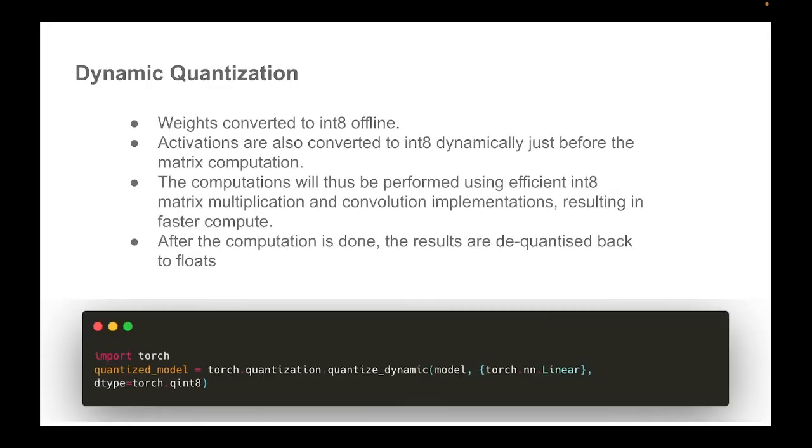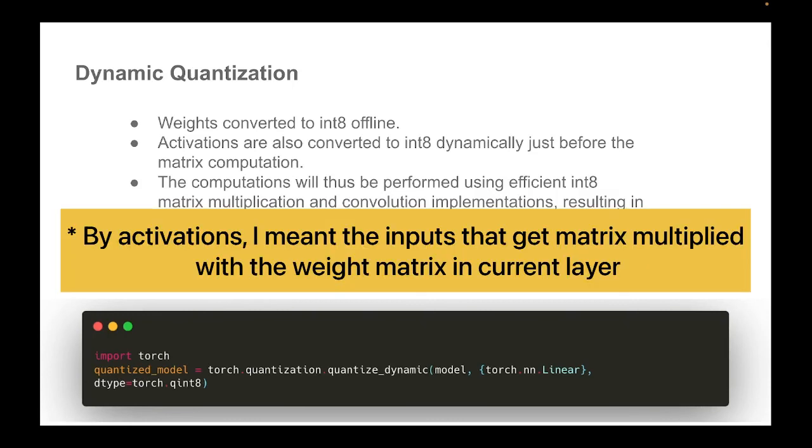So first we have dynamic quantization. So we know the weights in a neural network are fixed. We could use the approaches that we discussed, either uniform affine quantization or uniform symmetric quantization and turn these weights into integers offline. But the activations in a neural network are not fixed and it is dependent on the input that is given during the inference. So activations are also converted to int8, but this is happening dynamically during the computation, matrix multiplication computation at inference time.